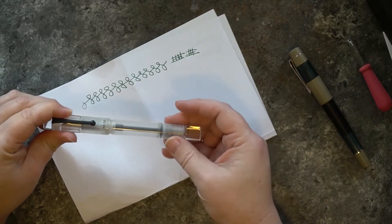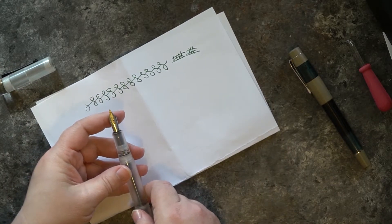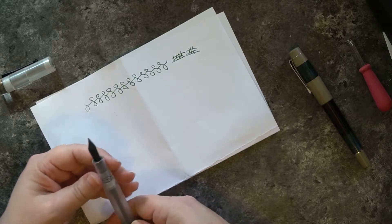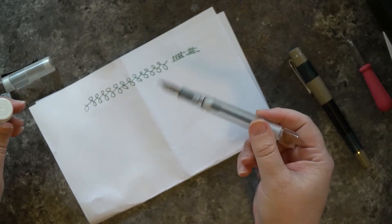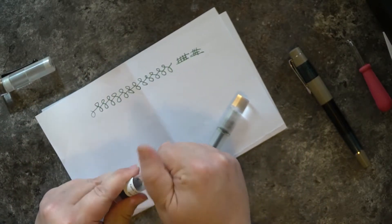This is the Opus 88. This is obviously a demonstrator. This has a number six nib. Now this one is a broad, and I'll fill it in just a second. And it's going to take a second or two for everything to go through. So I'm going to fill it with the green. St. Patrick's Day is coming up soon.